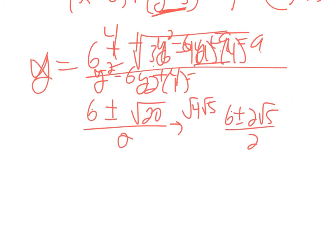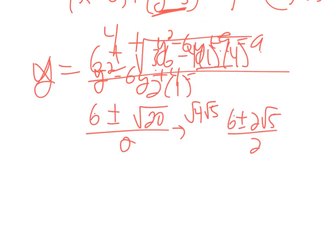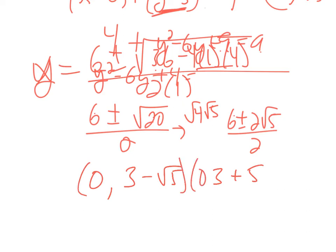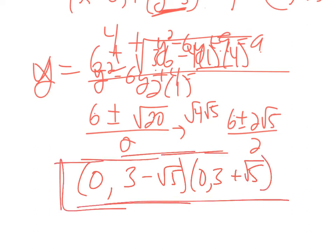Simplifying √20 = 2√5, so y = (6 ± 2√5) / 2, which gives y = 3 − √5 and y = 3 + √5. Those are the y-coordinates of the two y-intercepts.